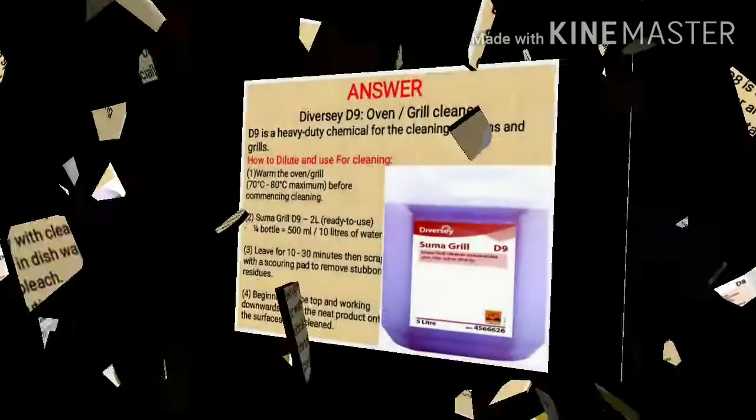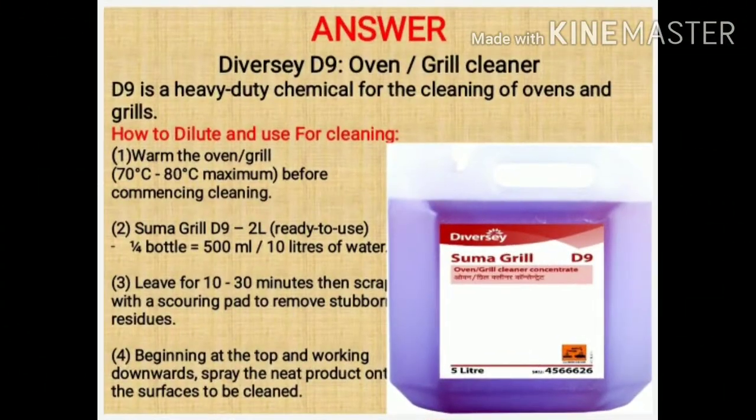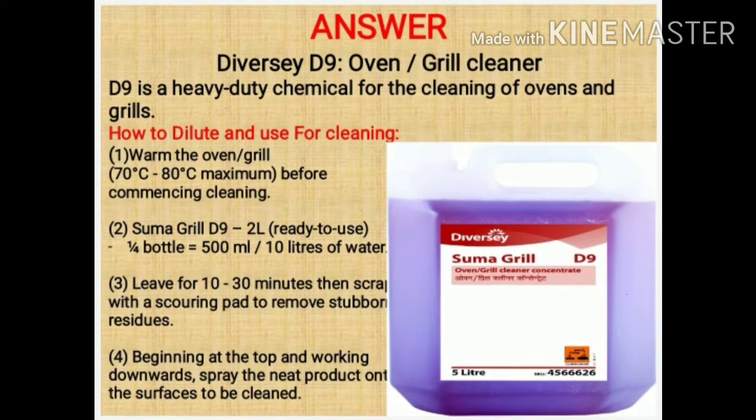Agla chemical hai D9. D9 chemical ka use grill cleaning ke liye kiya jata hai aur iska dilution hai 10 liter paani mein 500 ml.